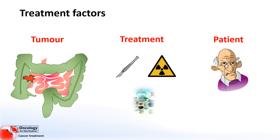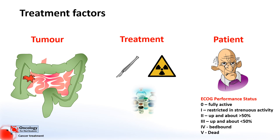Finally, but often most importantly, are patient factors. This will include how fit a patient is. For example, in some cases the most ideal treatment might be radical surgery to try and cure the tumour, but what if the patient has other medical problems, like heart failure and lung disease, which means they're most likely not able to survive a surgery, or if they do, they might have significant side effects. Often, oncologists will use something called the ECOG performance status as a guide to see how fit a patient is. Cancer treatments in general, and particularly curative treatments, are often very physically demanding, and if someone's already very unfit, these are often likely to only make their overall physical condition significantly worse.